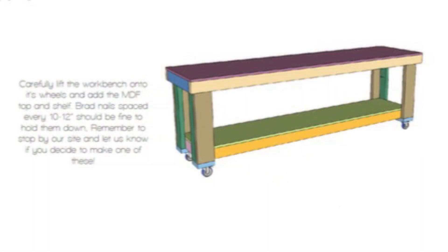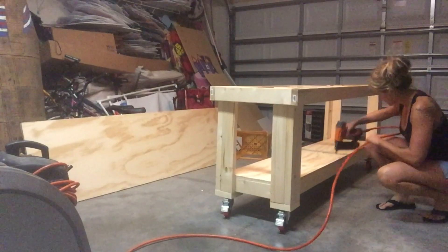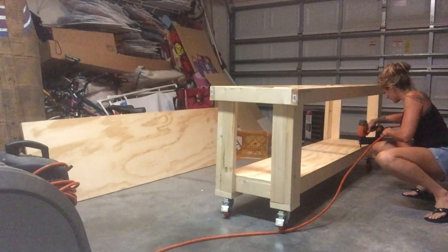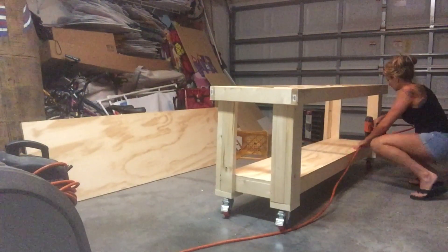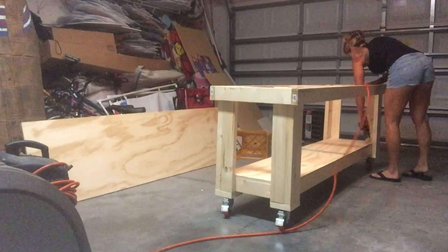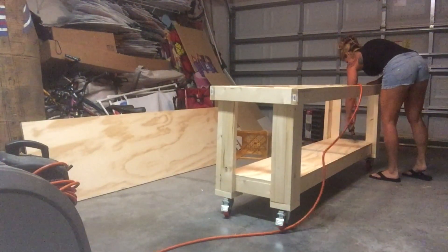And the last step is to attach the bottom shelf and the top shelf. You're going to want to stand it up, put the bottom shelf in first, and then using a brad nailer and some one and a half to two inch long brad nails, you just go all around the outer edge nailing it down. Then you're going to attach the top and do the same thing. And that's it.